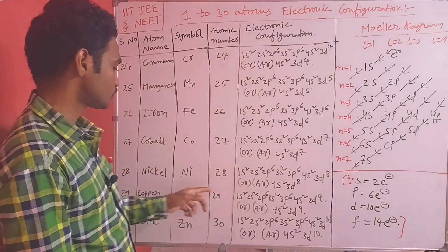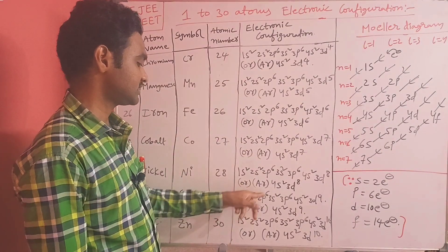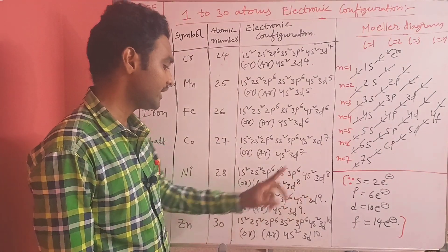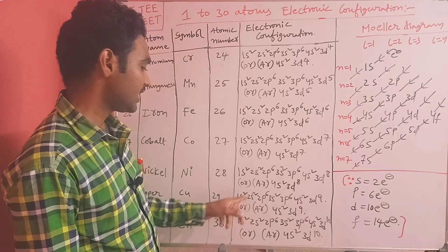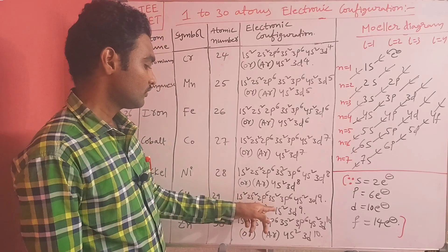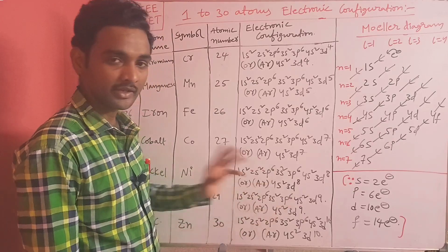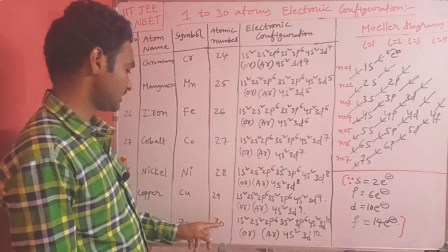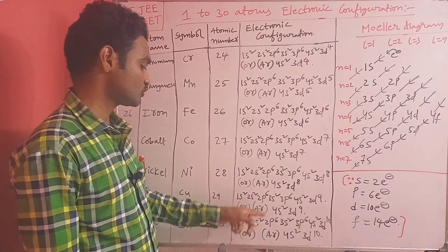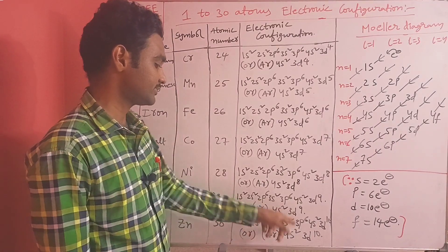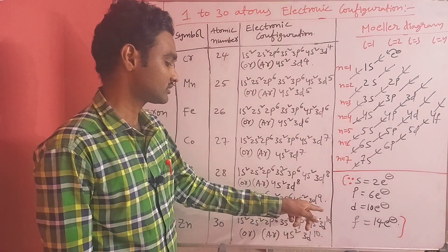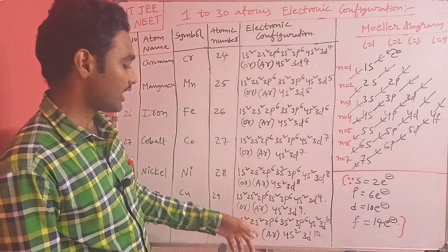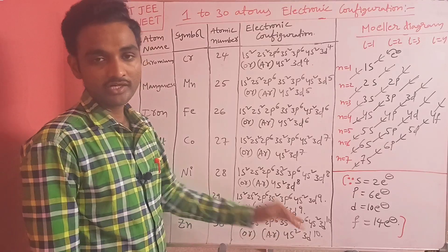Copper (Cu), atomic number 29: 1s2 2s2 2p6 3s2 3p6 4s2 3d9, overall [Ar] 4s2 3d9. Zinc (Zn), atomic number 30: 1s2 2s2 2p6 3s2 3p6 4s2 3d10, overall [Ar] 4s2 3d10.